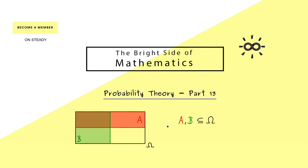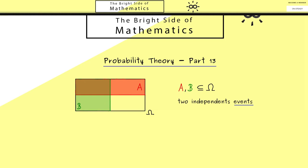However, as you might remember, there we talked about the independence of two events. Hence only such subsets of omega could be independent. Now it turns out that it can be very helpful to define the notion of independence for random variables. In other words, two maps can be independent.